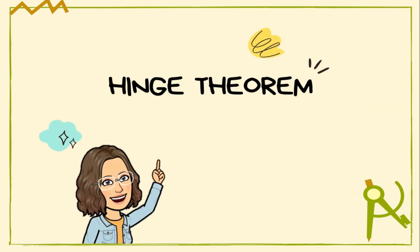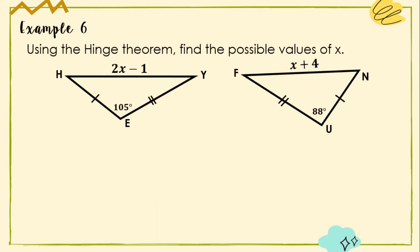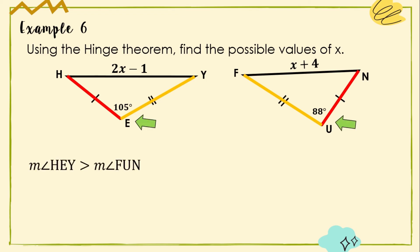We are now on our last theorem — the Hinge Theorem. This states that if two sides of one triangle are congruent to two sides of another triangle, and the included angle of one triangle is larger than the included angle of the other, then the third side of the first triangle is longer. In example 6, side HE ≅ NU, side EY ≅ UF, and angle HEY > angle FUN. Therefore, by the Hinge Theorem, side HY > side FN.